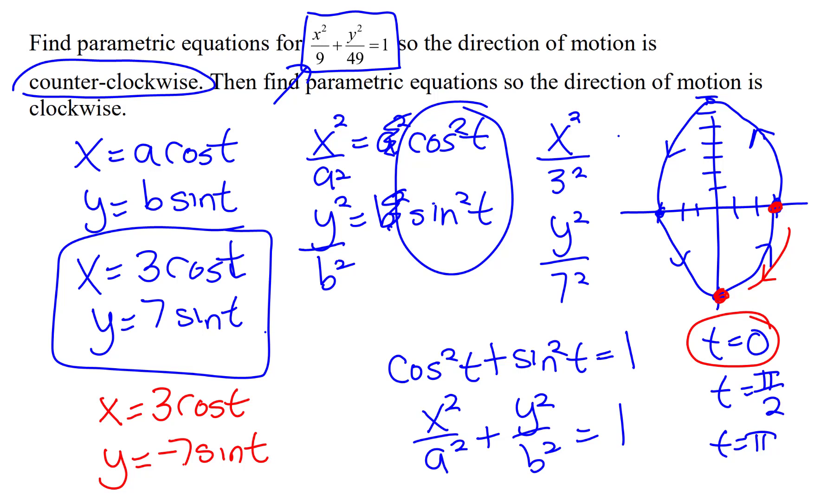And sine of π/2 is 1 times negative 7 is negative 7, and it'll go this direction. If I put π in, I'll end up over here. And then if I put in 3π/2, I'll end up over here, because cosine of 3π/2 is 0. Sine of 3π/2 is negative 1 times negative 7, which makes a positive 7. So this will make it go clockwise.